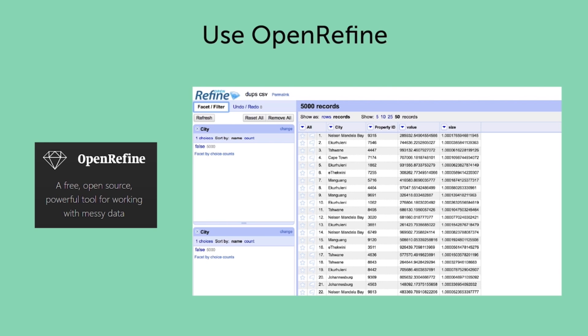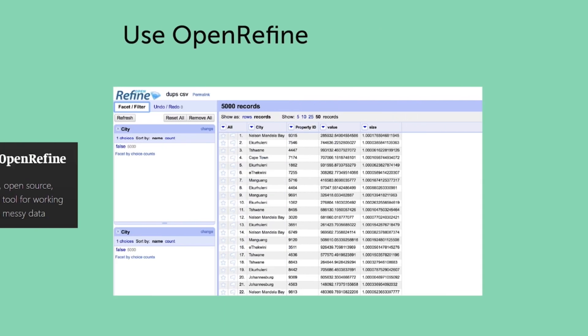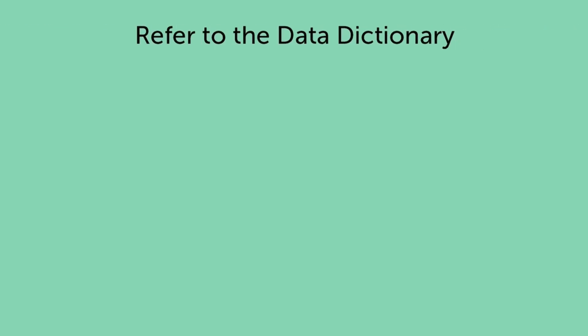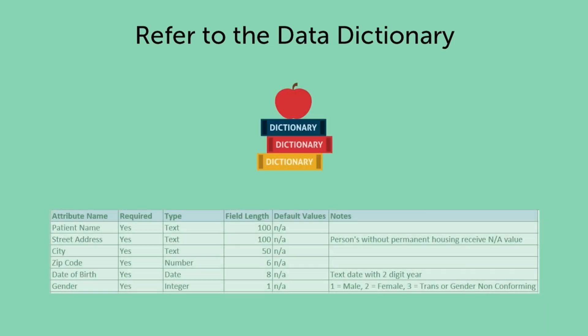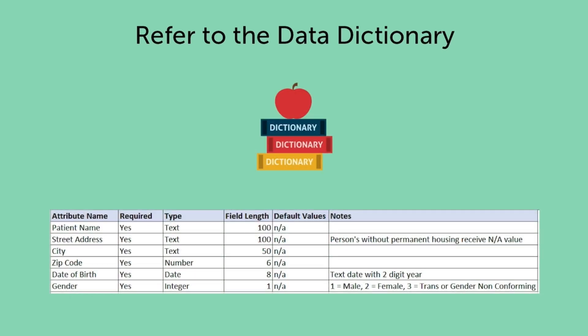You can learn more about cleaning your data in the further learning section at the end of this module. Lastly, when you receive a dataset, the owner will often include a data dictionary. You can refer to this data dictionary, or codebook, to decide what are valid and invalid values for a field or variable before you make changes. The data dictionary also specifies missing values and how they are coded. If there is no data dictionary, you can contact the data owner and ask for assistance.